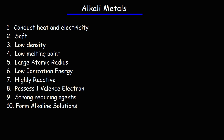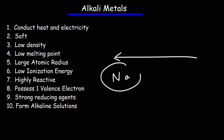Alkali metals also have a large atomic radius. Atomic radius increases towards the left of the periodic table, so sodium is larger than magnesium. Alkali metals have a relatively large atomic radius for their period — that is, if you compare them with other elements in the same row.